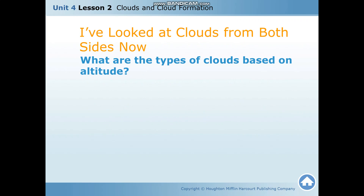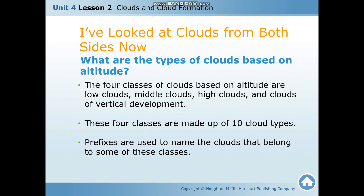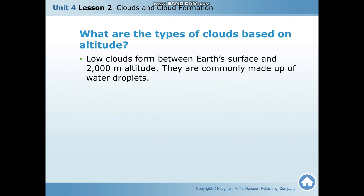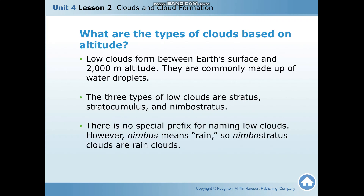What are the cloud types based on altitude? The four classes of clouds based on altitude are low clouds, middle clouds, high clouds, and clouds of vertical development. These four classes are made up of 10 cloud types, and prefixes are used to name the clouds in some of these classes. Low clouds form between Earth's surface and 2000 meters altitude and are commonly made up of water droplets. The three types of low clouds are stratus, stratocumulus, and nimbostratus. Nimbus means rain, so nimbostratus clouds are rain clouds.